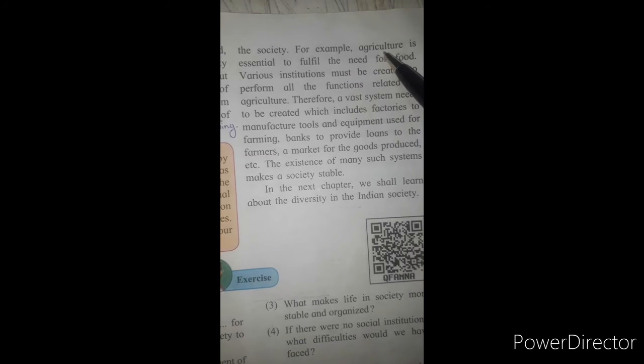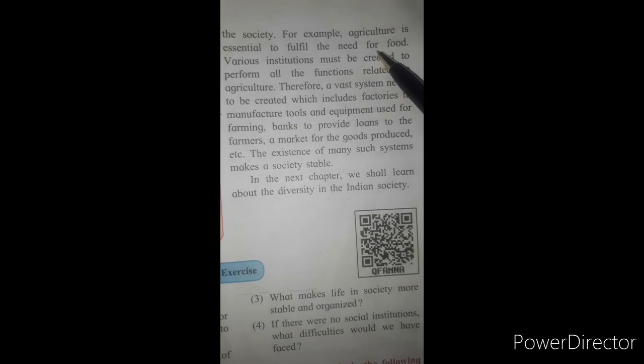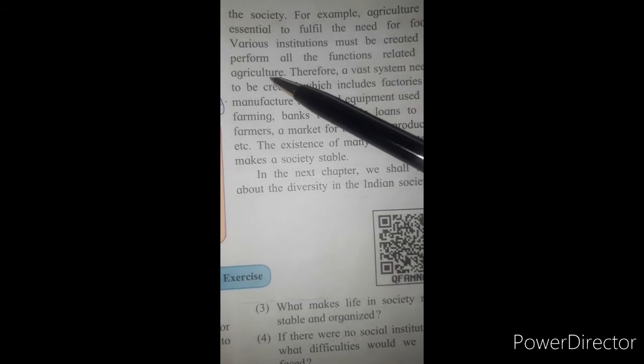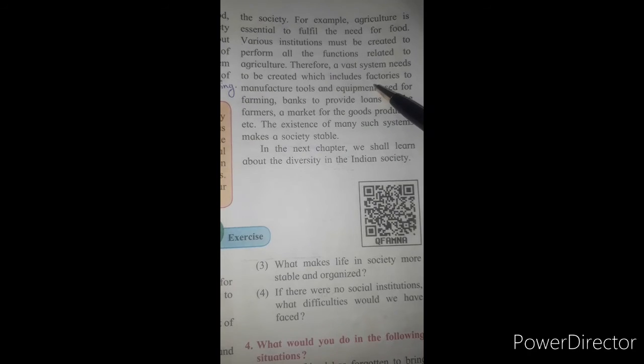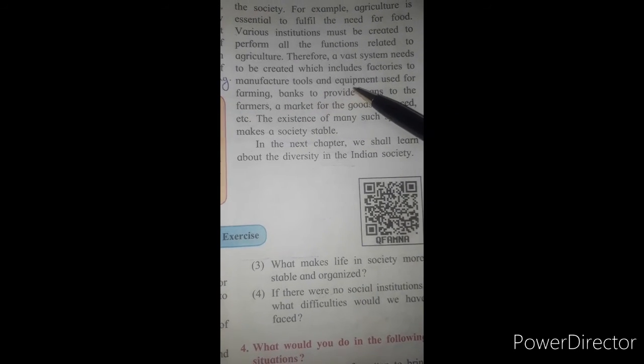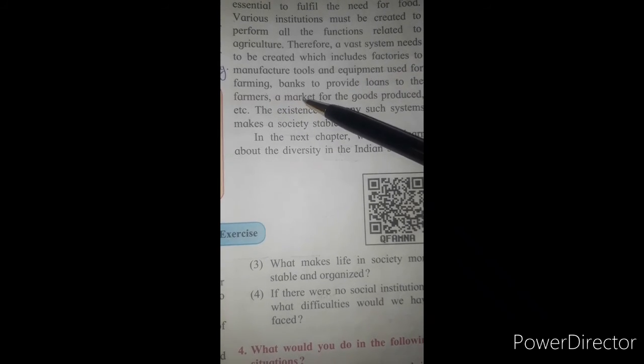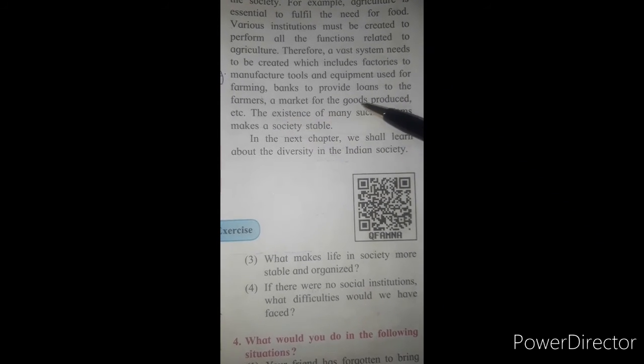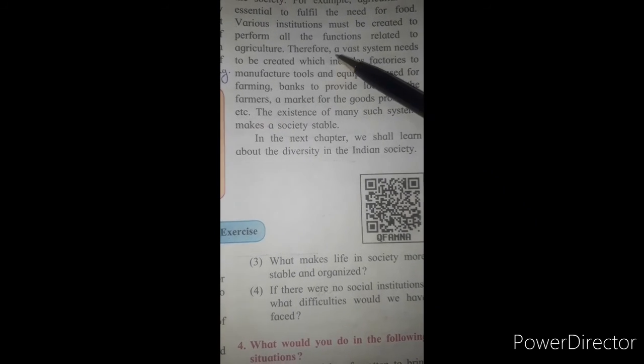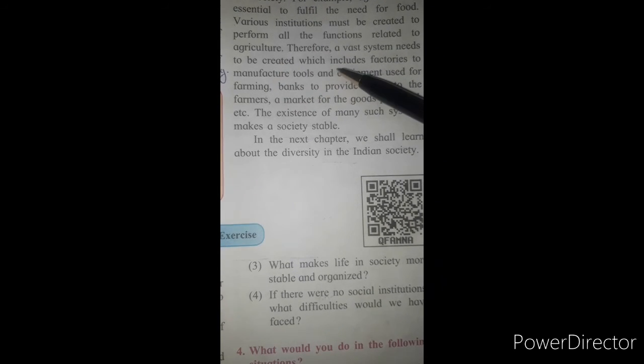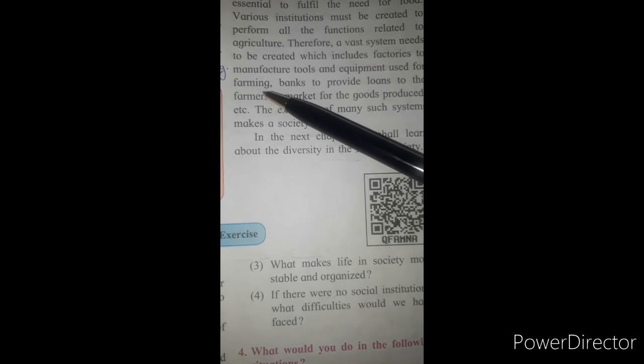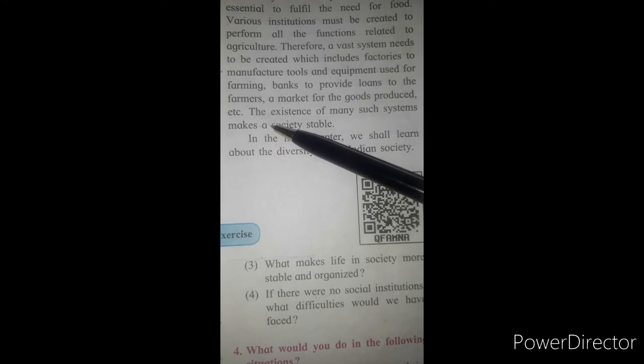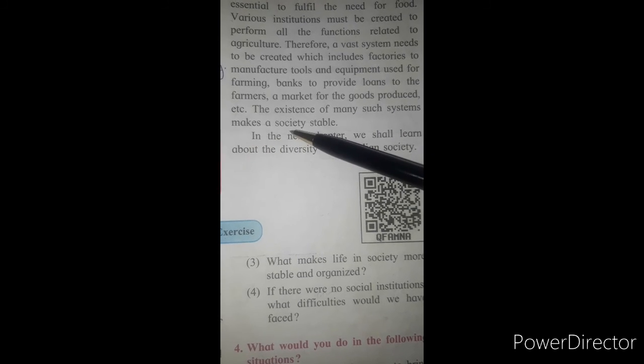Let us see the way of living of society. For example, agriculture. What does it fulfill? It fulfills our need of food. And various institutions function related to agriculture. This system creates factories to manufacture tools and equipment used for farming, banks to provide loans to the farmers, a market for the goods produced. Agriculture depends on industry which makes tools and farmers also depend on banks for loans. The existence of many such systems make a society. This is called stable society.